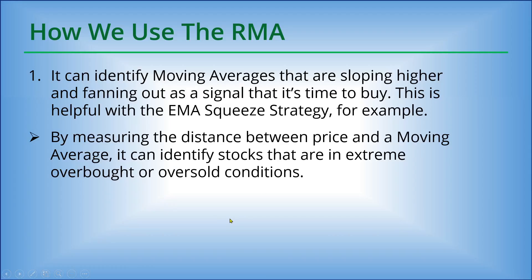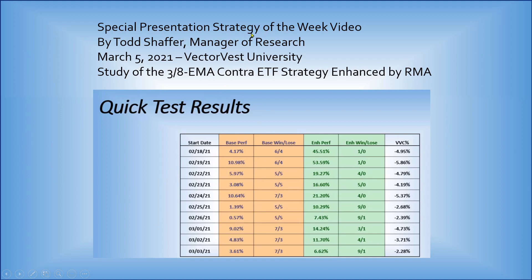Just in wrapping up on the RMA, I want to draw your attention to a special presentation: the Strategy of the Week video by Todd Schaefer, Manager of Research for VectorVest, on March 5th. If you're a subscriber, we archive all training videos, and you'll find Mr. Schaefer's study of the 3 and 8 EMA with Contra ETFs in VectorVest University. That strategy for oversold ETFs — if you look for ETFs and not the Contras — had explosive gains as well. Using the 3/8 relative moving average showed enhanced performance versus the base strategy, so the RMA provides real improvements.